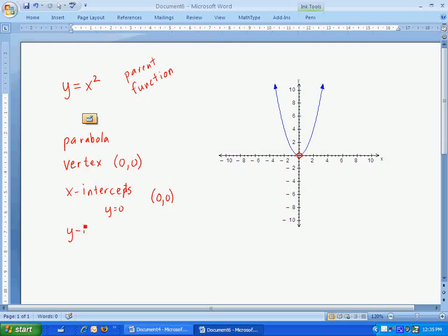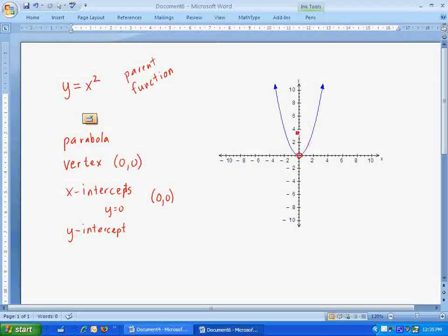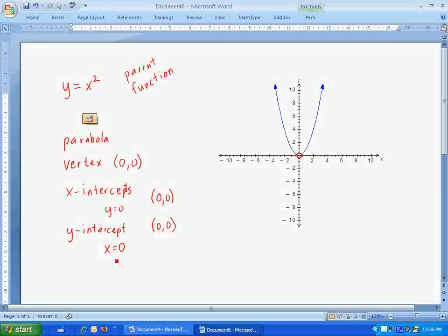The other important points we'll look at is the y-intercept. And there will only be one y-intercept for any parabola. And again, this is the place where the line crosses the y-axis, which just happens to be, again, (0, 0). For the y-intercept, x will always be 0.